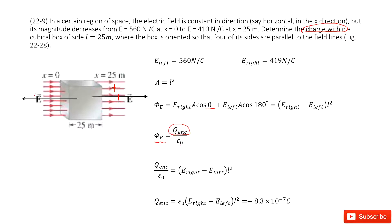Look at the other side. It is E A cosine theta. This theta is 180 degrees because they are in opposite directions.